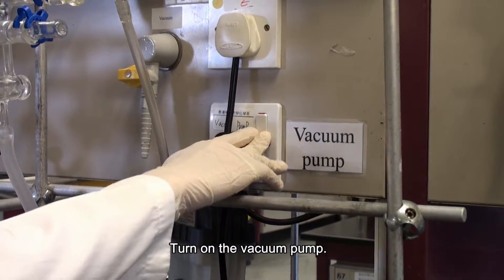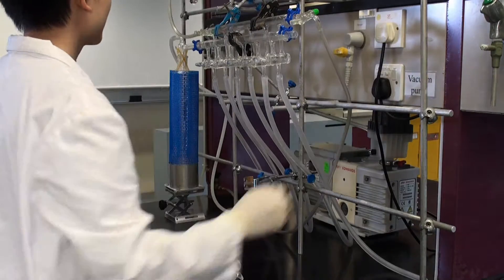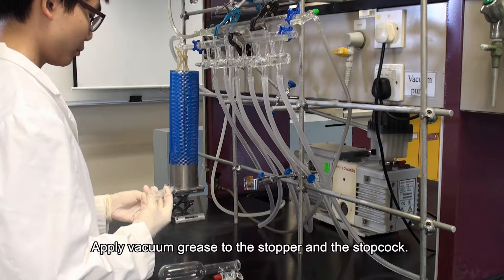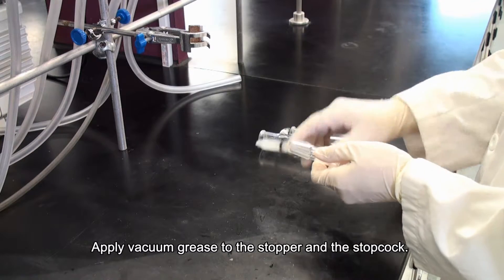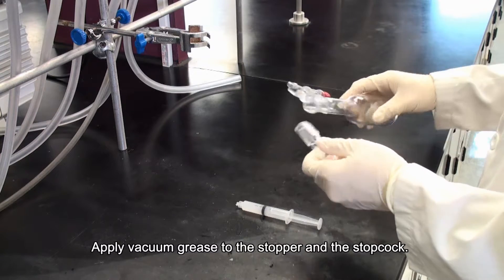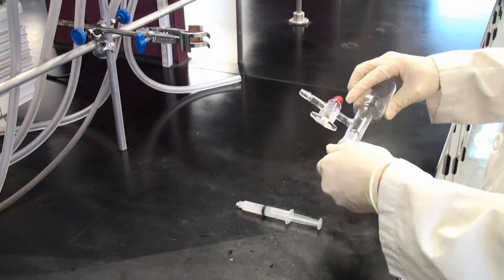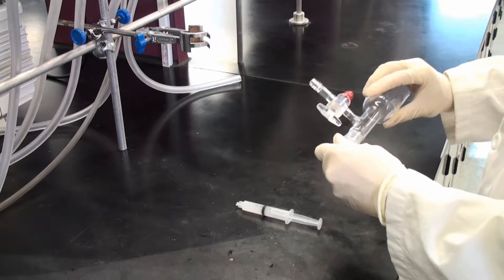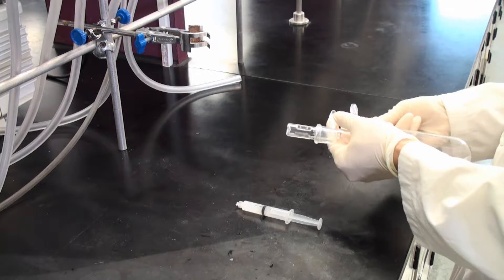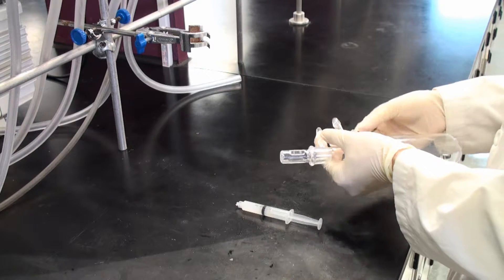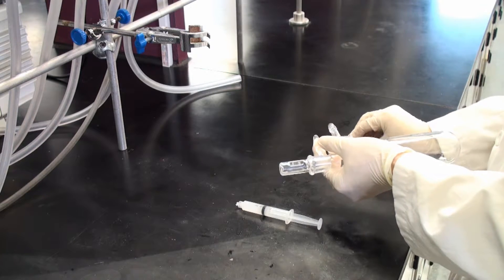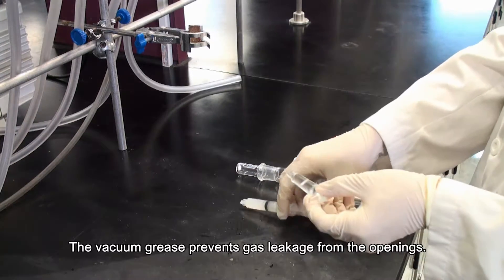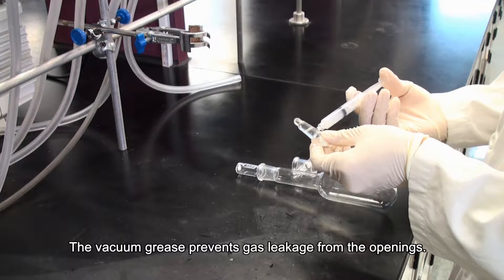Turn on the vacuum pump. Apply vacuum grease to the stopper and the stopcock. The vacuum grease prevents gas leakage from the openings.